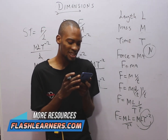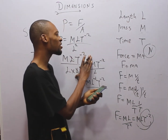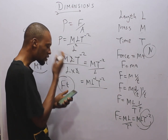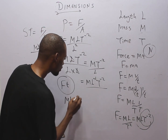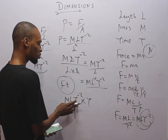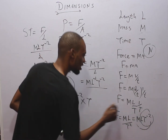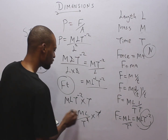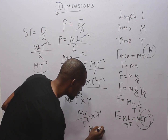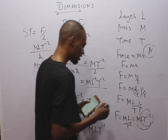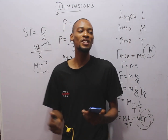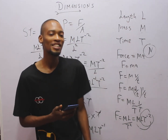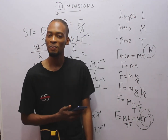The last question asks which dimension represents impulse. Impulse is force times time. Force has dimension M·L·T⁻². Multiplying by time T, one T cancels one T⁻², leaving M·L·T⁻¹. So the dimension of impulse is M·L·T⁻¹, which is option B. With this, we have answered several JAMB questions on dimensions. Hope you found this helpful — get the Flash Learners app for more questions, and let me know how you feel in the comments.